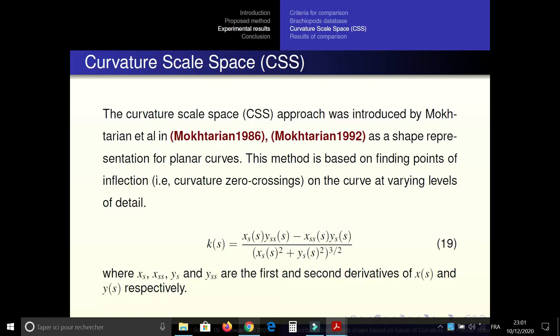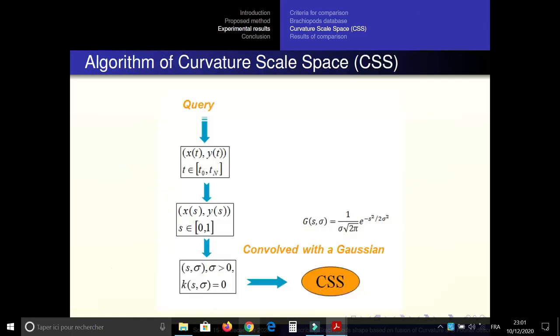The curvature scale space proposed by Mokhtarian as a shape representation for planar curves. This method is based on finding point of inflection, curvature zero crossing on the curve at varying levels of the scale.